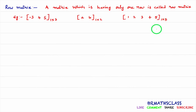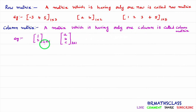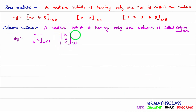Now we will learn what is a column matrix. A matrix which has only one column is called a column matrix. Observe this matrix — its order is 2 by 1: two rows and one column. This matrix has only one column, so it is an example of a column matrix. Observe this matrix of order 3 by 1: three rows and one column. This matrix has only one column, so it is an example of a column matrix.